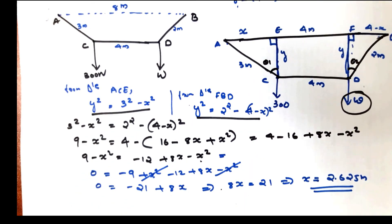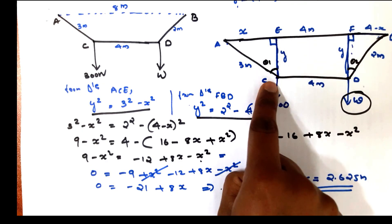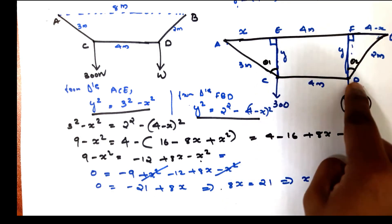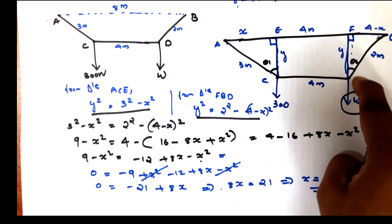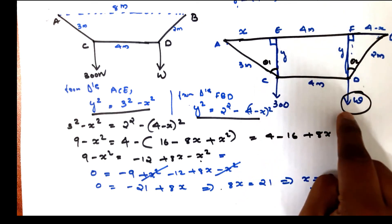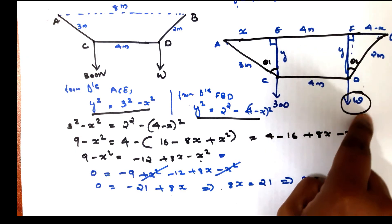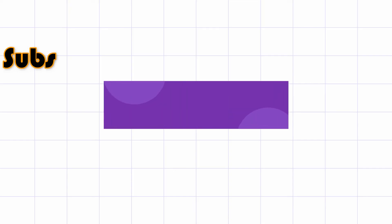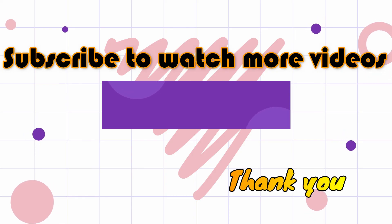This is the key step. We calculate the unknown load W at point D using W equals TDB cos(43.43°). With TDB known, we can find the tensile force and the final answer for the load at D.